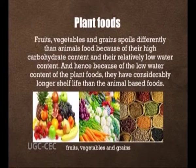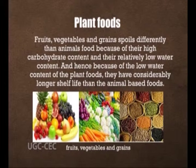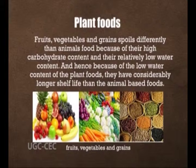Fruits, vegetables and grains spoil differently than animal foods because of their high carbohydrate content and relatively low water content. Due to the low water content, plant foods have a considerably longer shelf life than animal-based foods. Carbohydrates favor microbial fermentation to acid or alcohol, which limits further decomposition, and the microbial action can be managed to produce fermented foods.